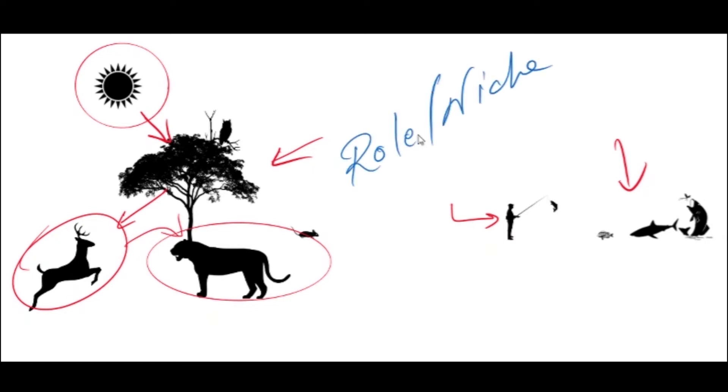This is basically the role of all the organisms in their habitats. Now let's take this tiger and the deer, for example. The role of the tiger is to eat the deer, and the role of the deer is to eat the food from the tree, hence the energy can be transferred from the tree to the deer to the tiger.